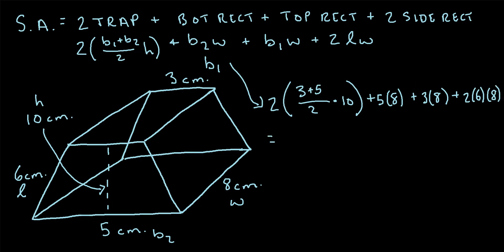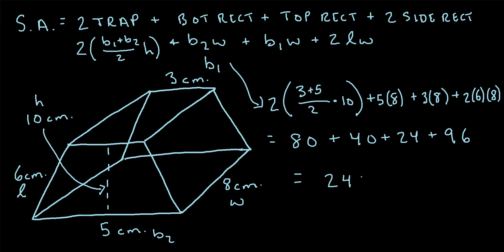Let's calculate: three plus five is eight, divided by two is four, times ten is 40, so two times 40 is 80. Plus five times eight is 40. Plus three times eight is 24. Plus two times six is 12, and 12 times eight is 96. When we add all these values together — 80 plus 40 plus 24 plus 96 — we get 240, and our unit is centimeters squared since we're talking about area.